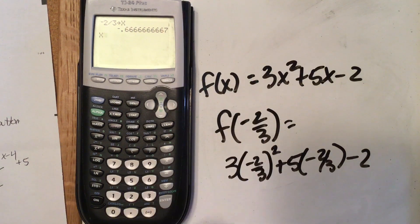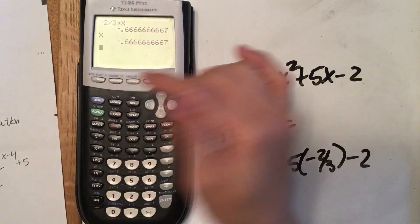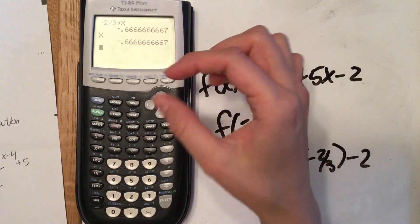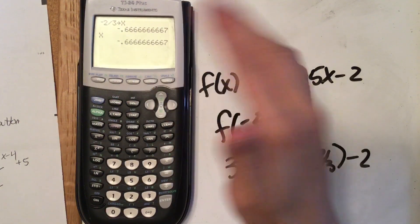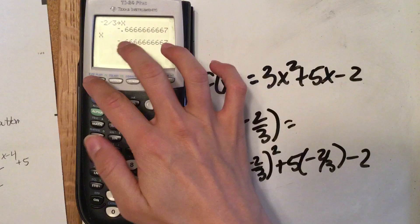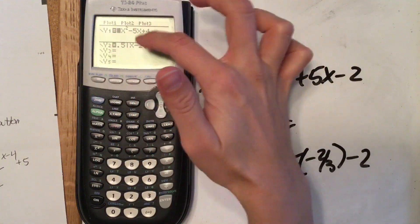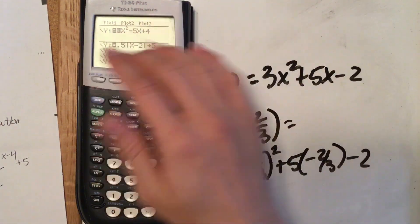So now anytime I use x, it's going to use -2/3 in there. When you're on your home screen, your x button has a particular value stored to it, so that's why you'll get a number anytime you use x in your home screen. But when you're using it here, it's not that particular number. It's working as an independent variable.